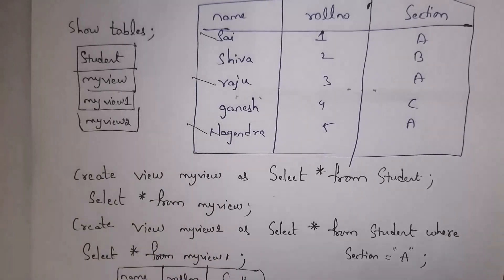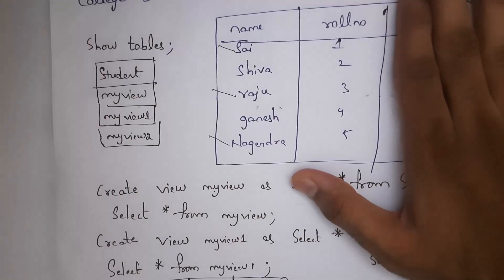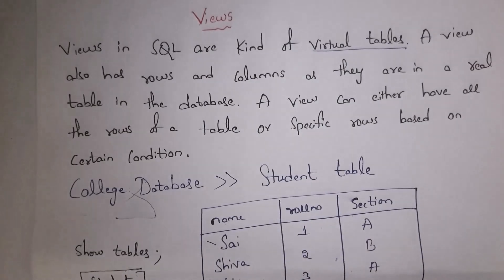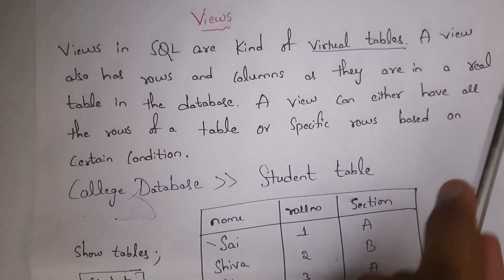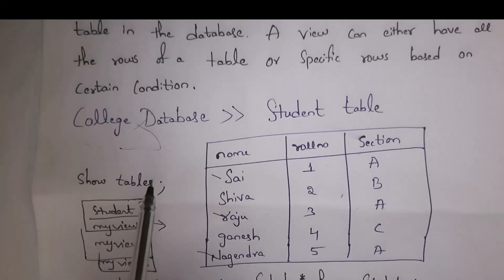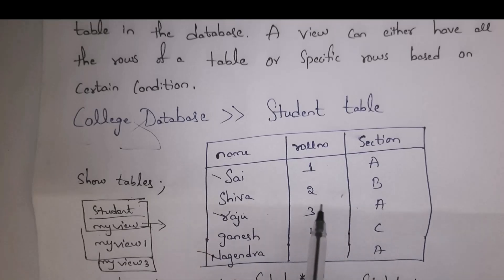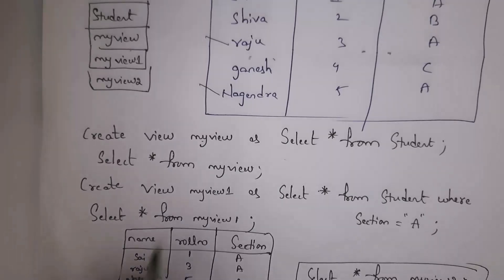To see data in 'my_view_2', write SELECT * FROM my_view_2. The output will skip the section column and display only the name column and roll number column. Views are simply virtual tables. A view also has rows and columns as they are in a real table. Based on the given condition, a view can contain all rows or only specific rows.